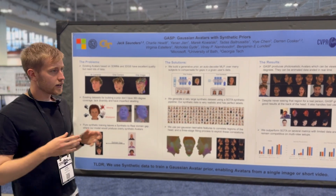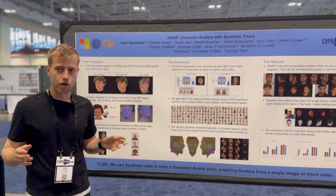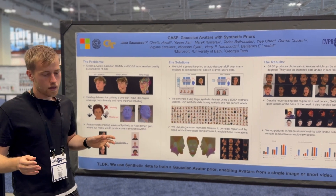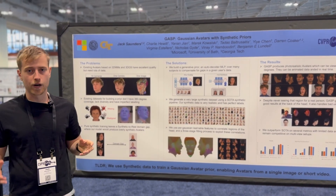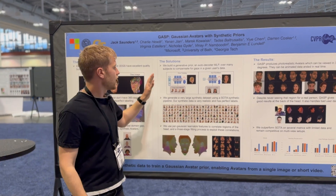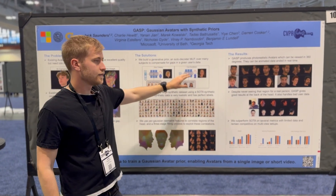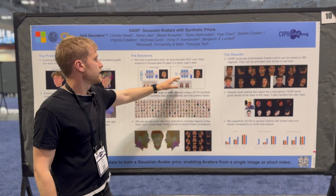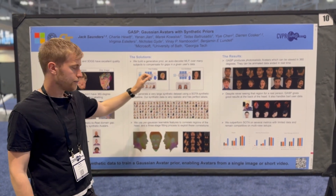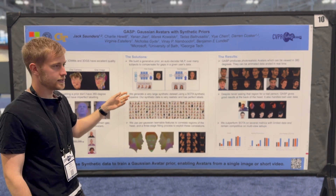In an ideal world, we would take a huge amount of data from thousands of people and generate some sort of generative prior, which means we could have an input latent vector and output a Gaussian avatar. Then we could just optimize that latent vector to get a Gaussian avatar from our limited user data.